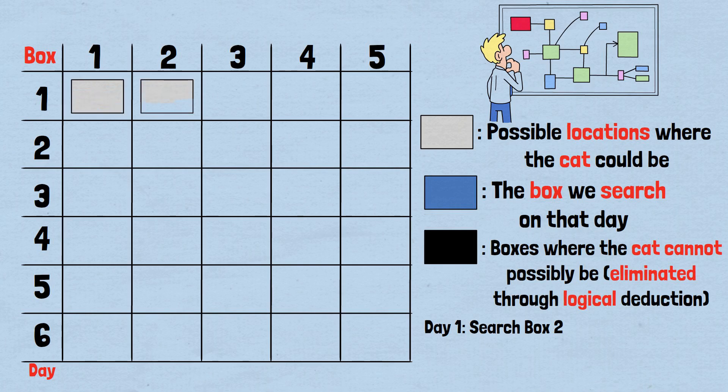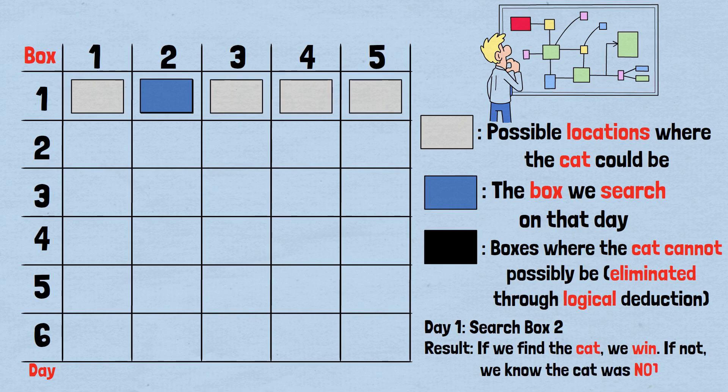Grid status: All 5 boxes, 1, 2, 3, 4, 5, are gray. The cat could be anywhere. Our search: We check box 2, marked in blue. Result: If we find the cat, we win. If not, we know the cat was not in box 2.